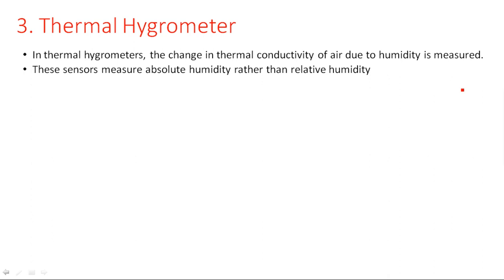Thermal hygrometers measure absolute humidity rather than relative humidity. There are three types of humidity: absolute, relative, and specific. Relative humidity measures humidity at a particular temperature, while absolute humidity calculates humidity irrespective of temperature. Since temperature varies constantly with moisture content in the atmosphere, it is better to go for absolute humidity rather than relative humidity.